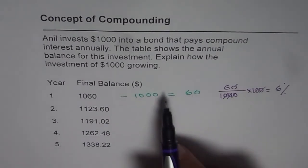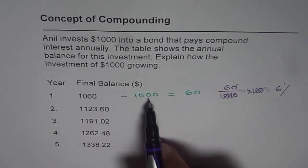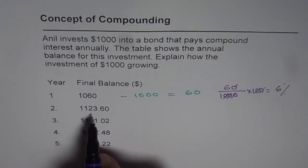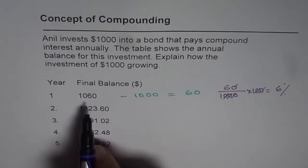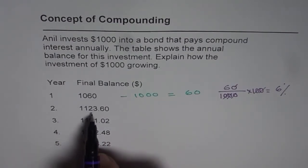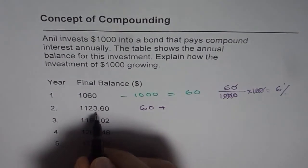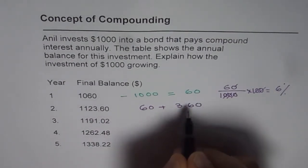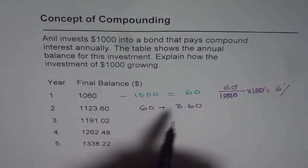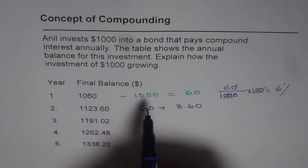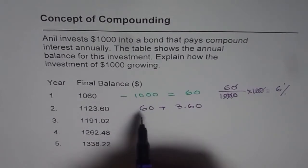If we expect a growth rate of 6% on $1000, that means we expect $60 extra next year. But what do we find? At the end of the second year it is $1123.60. If I add $60 to $1060, I get $1120. So there is $3.60 more than expected.